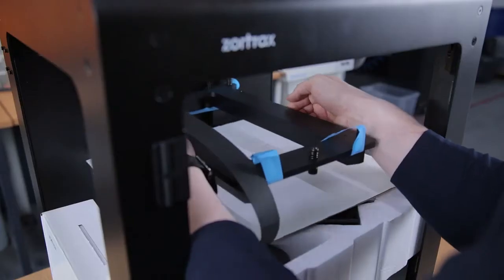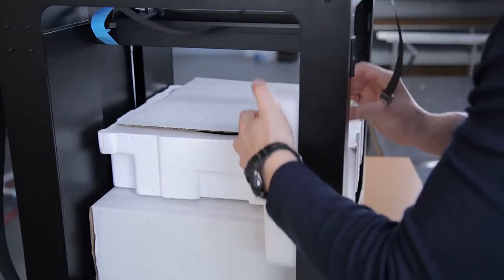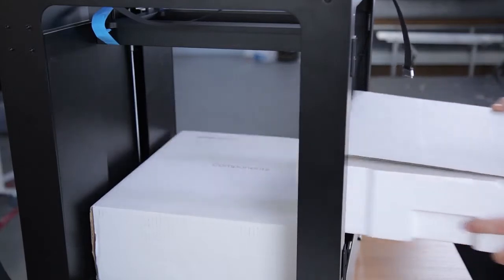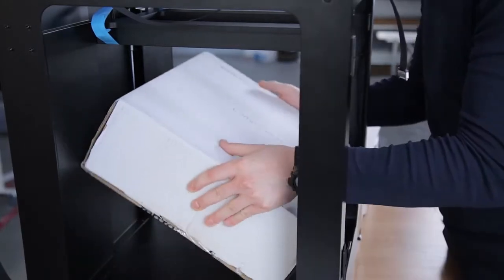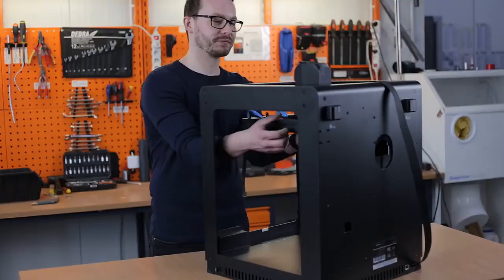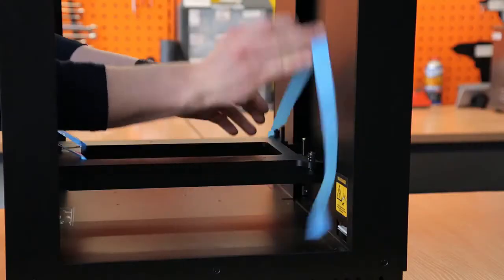In order to safely take out the foams, you'll need to raise the heat bed mount. Once this is done, you can extract all the foam elements from the printing chamber. Now, you can lower the heat bed mount to its proper position and take off the safety tapes.